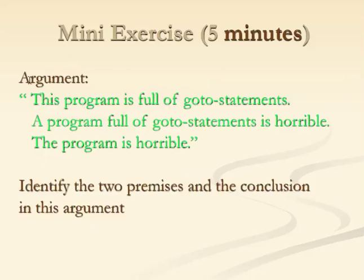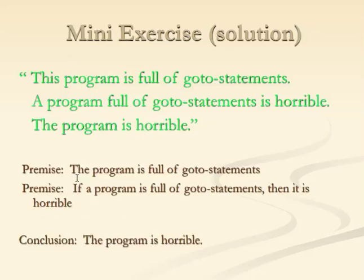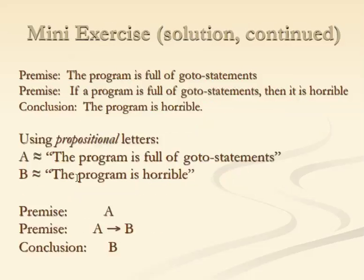In class, we did an exercise to identify the two premises and the conclusion. For example, we can let A mean 'the program is full of go-to statements' and B mean 'the program is horrible'. The first premise is that the program is full of go-to statements. The second premise is that if a program is full of go-to statements, then it's horrible. From these two, we conclude that the program is horrible.